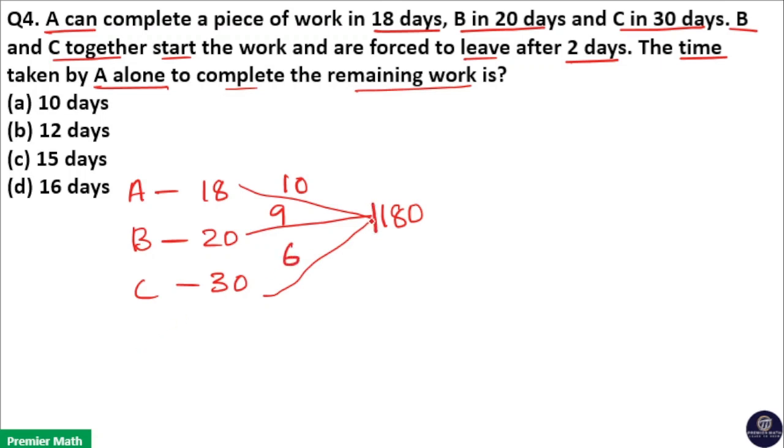Now the concept of this diagram means 180 units is the total work. A's efficiency is 10, B's efficiency is 9, C's efficiency is 6. That means A can complete 10 units of work in a day, B can complete 9 units in a day, C can complete 6 units in a day.